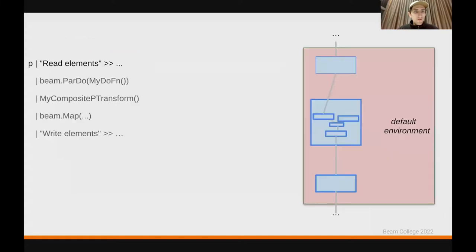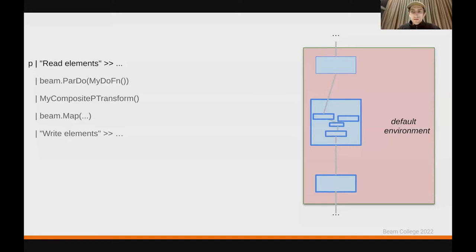Let's look at an example pipeline where we have some input data coming in and we have a few transforms. If you don't make any special modifications to the environments, your pipeline will have one default environment and all the transforms will be assigned to that default environment.